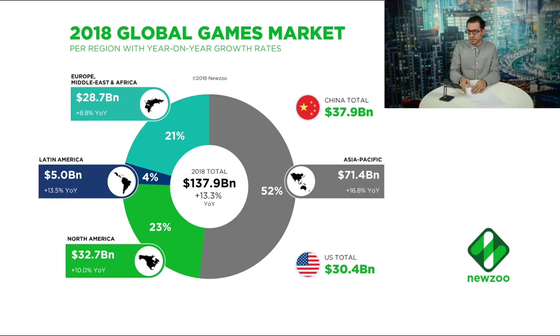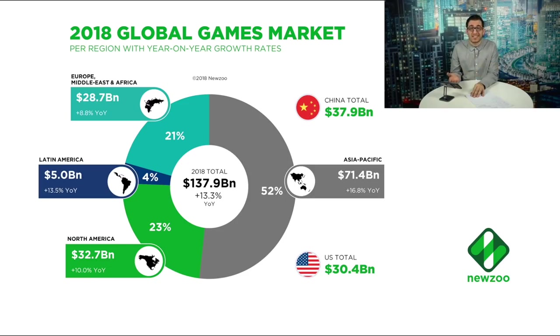Let's talk about where revenue is coming from globally. If you take a look at this picture, you'll immediately see that Asia Pacific is around 52% of the market — that's huge. Most people playing games are coming from Asia, not from the US or Europe. China alone has around 40 billion US dollars in game revenue, which is around 28% of the global market coming from just one country, with year-over-year growth of around 17%.